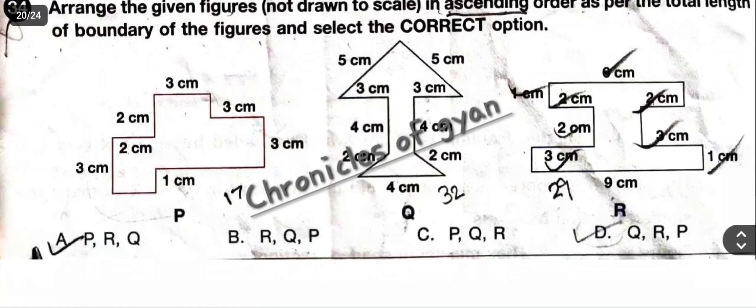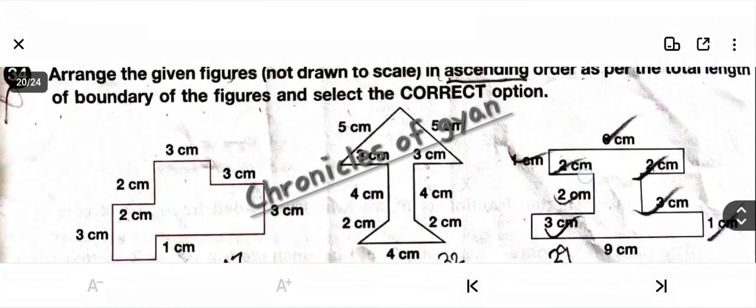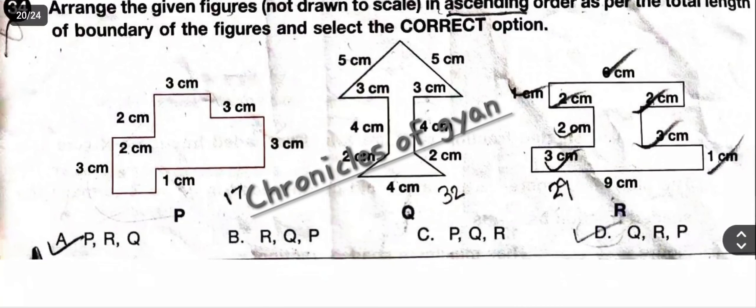Question 34: Arrange the given figures in ascending order as per the total length of boundary, and select the correct option. Figure P has a boundary of 17 cm, figure Q has 32 cm, and figure R has 29 cm. Ascending order — smallest first: P (17), then R (29), then Q (32). So the ascending order is P, R, Q. The answer is option A.